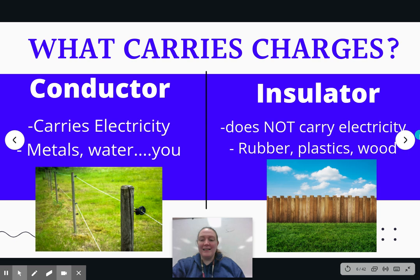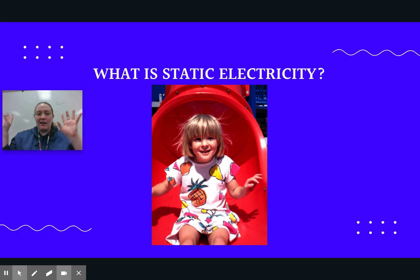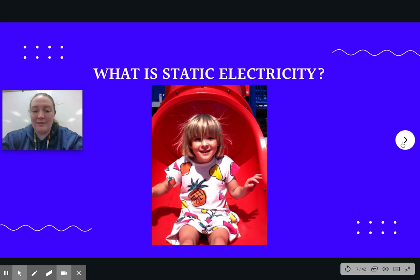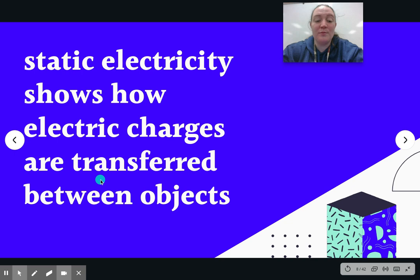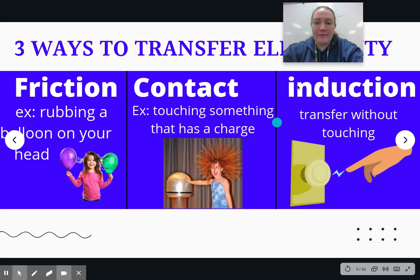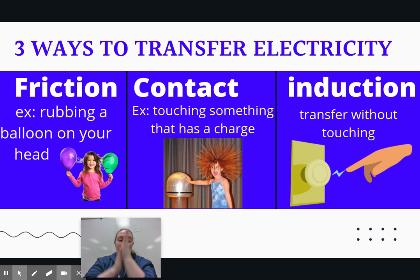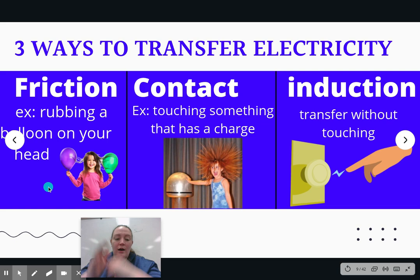Now we're going to talk about static electricity and move on to how that goes into the electricity we use in lights and things like that. Static electricity shows how electric charges are transferred between objects — how these charges move between one object and the other. There are three ways it's going to move. The first is friction. We know the word friction — we talked about that at the beginning of the school year. It's when things rub against each other. Friction is when something rubs against each other and passes on that electricity.